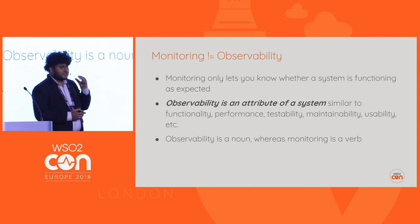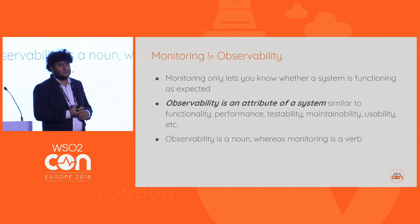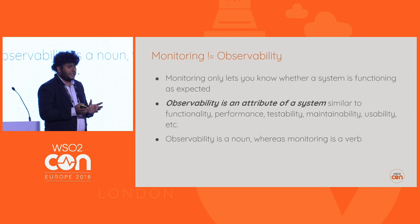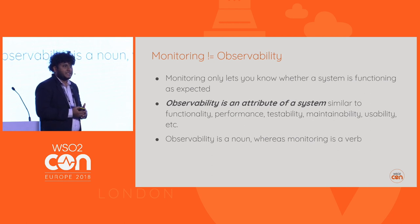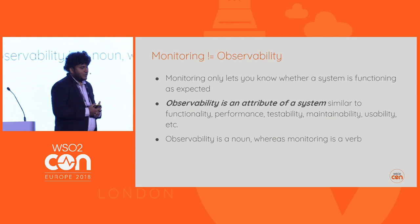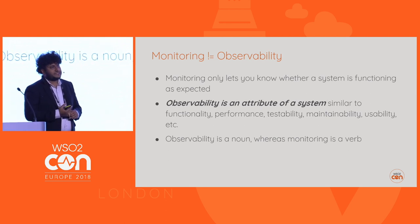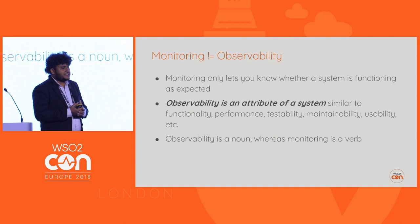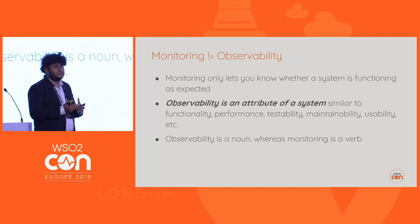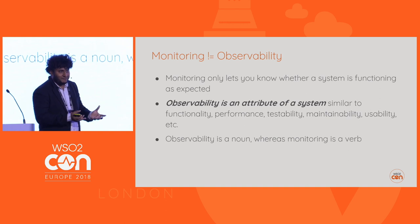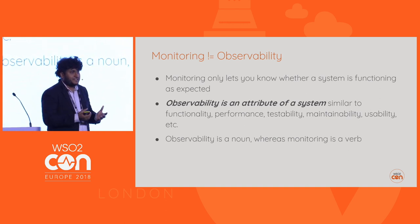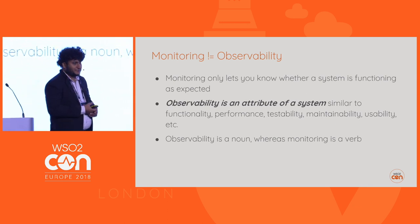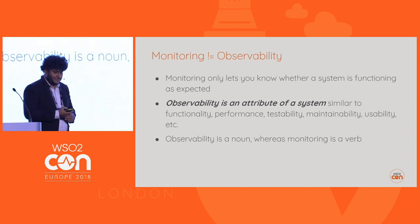One of the main questions is: is monitoring the same as observability? Monitoring means basically figuring out and checking whether a system is working as expected. Observability is an attribute of the system, similar to maintainability or usability. It tells whether you can observe the system effectively — it's a thing you have, while monitoring is a thing you do. That's the main difference between the two terms.